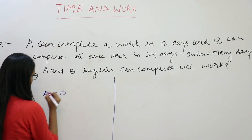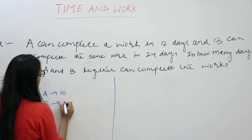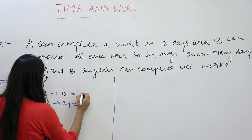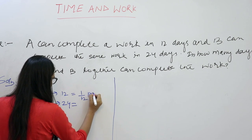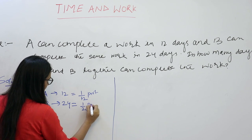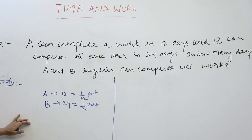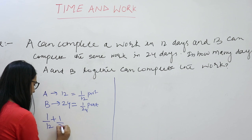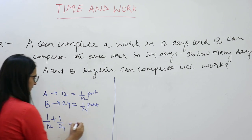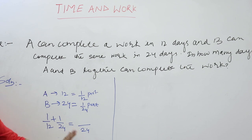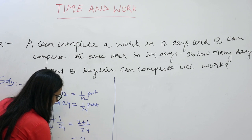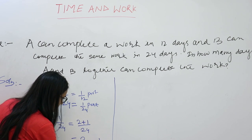A can complete a work in 12 days. B can complete a work in 24 days. One day work of A would be equal to 1 by 12 part, and one day work of B must be equal to 1 by 24 part. Now we will add the one day work of A and B, that is 1 by 12 plus 1 by 24. Take the LCM of these two numbers, that must be equal to 24. That gives us 3 by 24, or you can say 1 by 8.